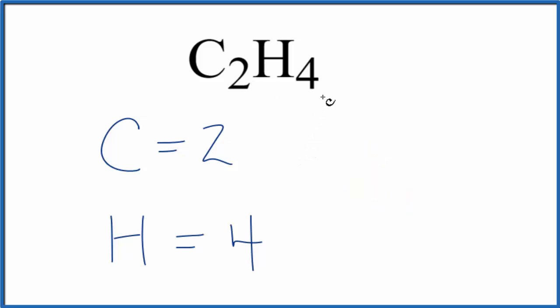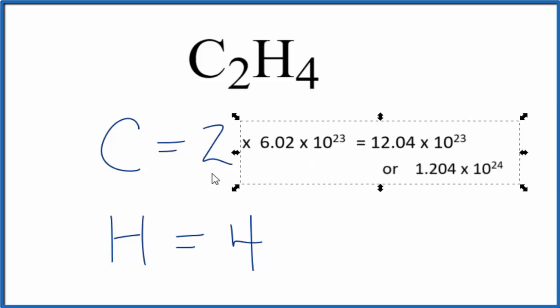Sometimes you're asked to figure out the number of atoms in 1 mole of C2H4. For example, how many carbon atoms are in 1 mole of C2H4? To do that, we're just going to multiply the number of the element 2 times Avogadro's number.